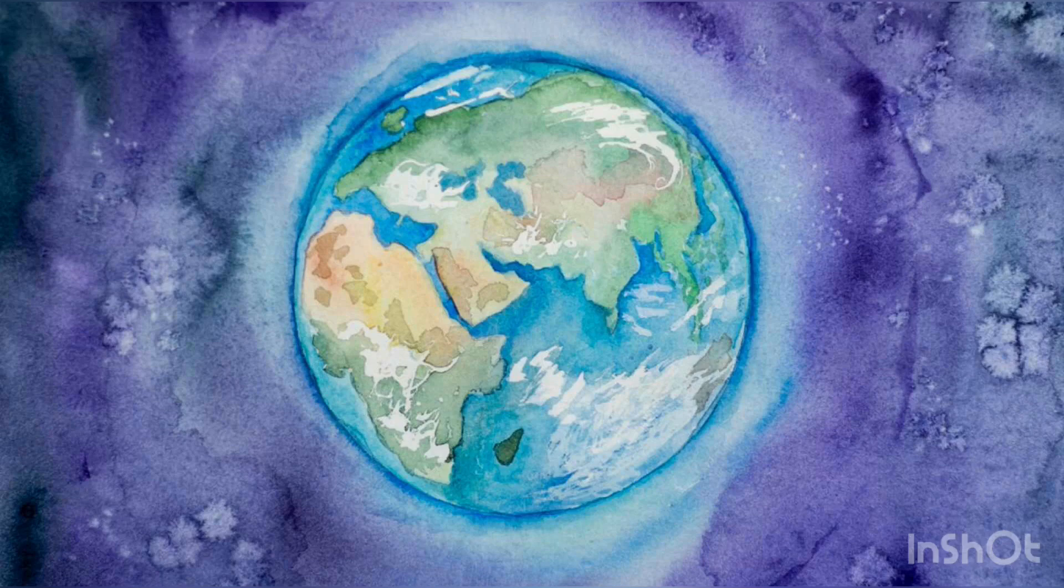Earth's surface layer is formed of several slowly moving tectonic plates, interacting to produce mountain ranges, volcanoes, and earthquakes.